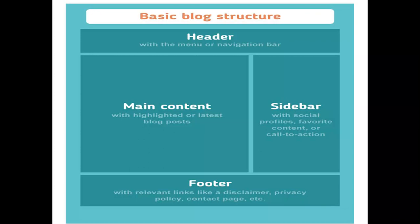The appearance of blogs has changed over time, and these days blogs include a wide variety of items. Most blogs still include some standard features and structure. The common features are: the header with the menu or navigation bar, the main content area with highlighted or latest blog posts, the sidebar with social profiles and calls to action, and the footer bar which includes relevant links like privacy policy and contact page.